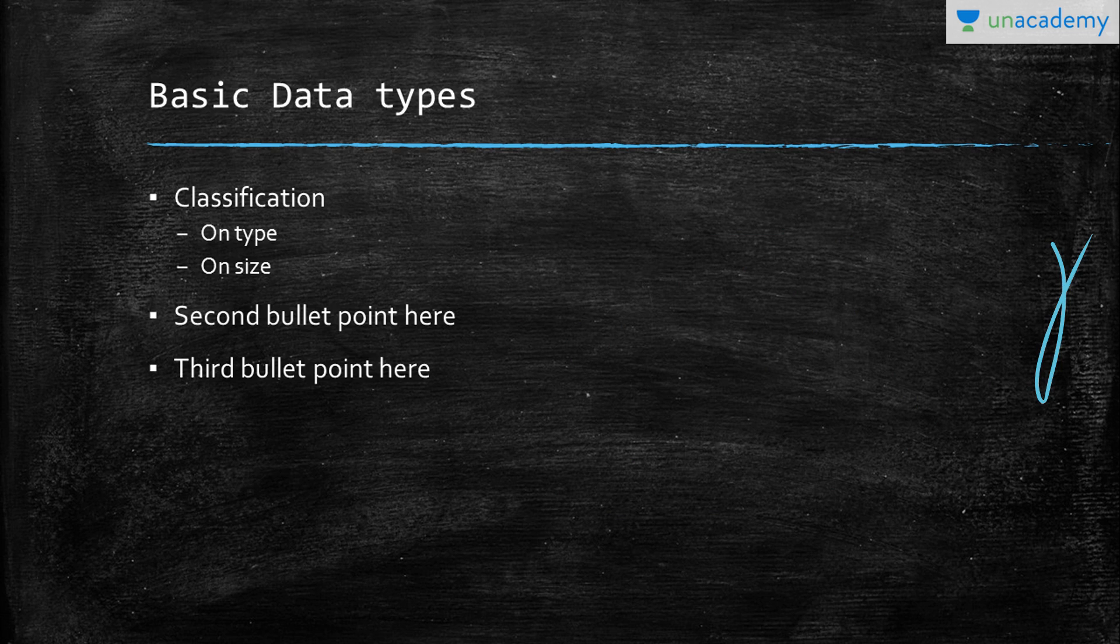On the basis of size, we can define it further. For my phone number, if I'm having a small digit and I want to define it, I'll use a small data type. But if I'm having a very large value to define, I'll use the bigger one, the larger value size.